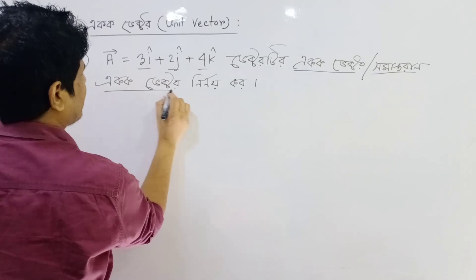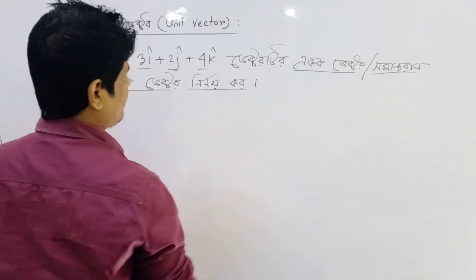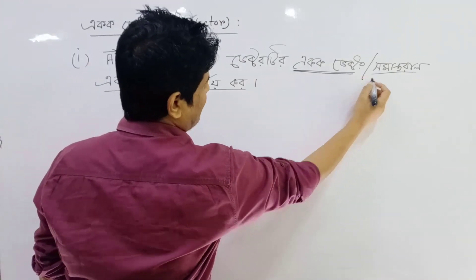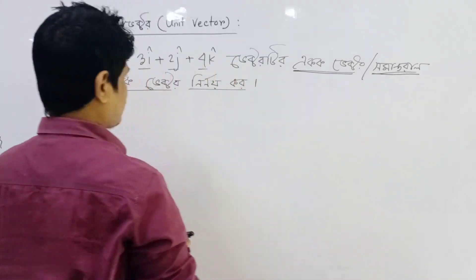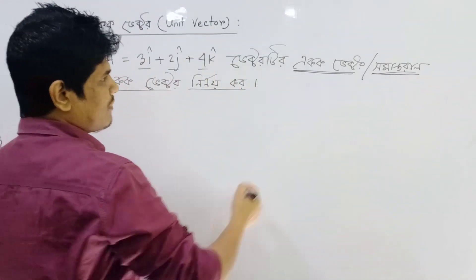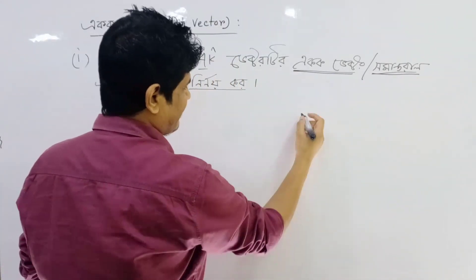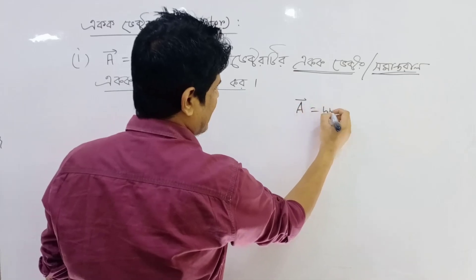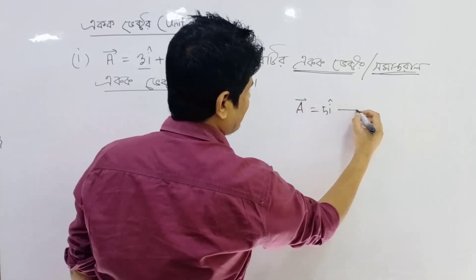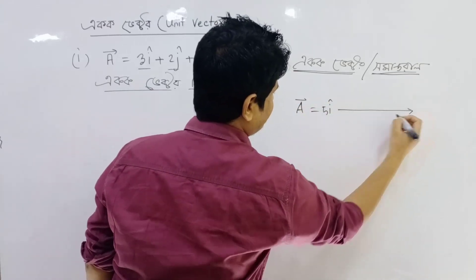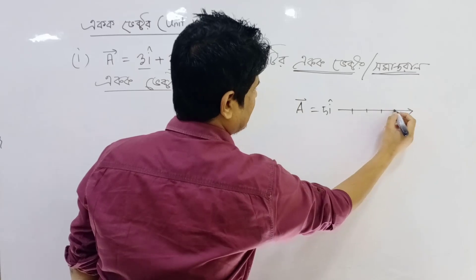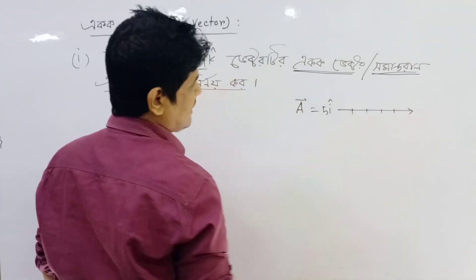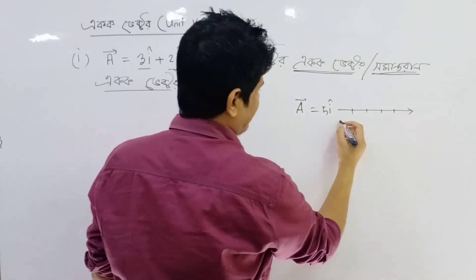This will be equal to 1 vector. What is the number of vector? We can write the number of vector. If this is 5i, how to write it — 1, 2, 3, 4. So what is the number of vector?